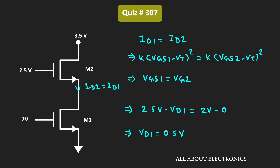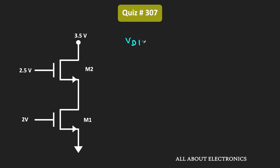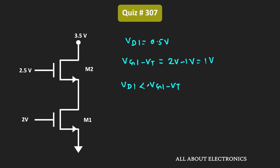But if VD1 is equal to 0.5V, then the condition for saturation will not be satisfied for transistor M1. Because for transistor M1, voltage VD1 is equal to 0.5V, while VG1 minus VT is equal to 2V minus 1V, that is equal to 1V. Clearly, drain voltage VD1 is less than VG1 minus VT. That means transistor M1 is not operating in the saturation region. But since gate voltage VG1 is greater than the threshold voltage, transistor M1 is operating in the linear region. So M1 is in the linear region, while M2 is in the saturation region.